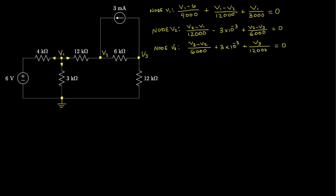At this point, we have 3 equations and 3 unknown voltages — V1, V2, and V3 — so we should be able to solve those. Let me rewrite them in a more structured form. For the node V1 equation, gathering all V1 terms: 1/4,000 + 1/12,000 + 1/3,000. Putting them all over 12,000 gives 3/12,000 + 1/12,000 + 4/12,000 = 8/12,000. So we have (8/12,000) times V1.